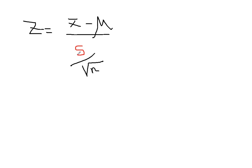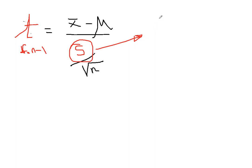The minute you replace a parameter with its estimate, Z is no longer a Z distribution — it becomes the t-distribution. The t has degrees of freedom attached to it, equal to n minus 1. This comes from the sample standard deviation formula: the sum of squares divided by the degrees of freedom, then take the square root. You lose one degree of freedom because you're using an estimate while estimating.